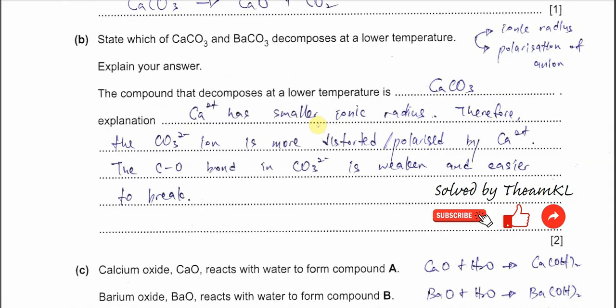Part B: State which of calcium carbonate and barium carbonate decomposes at a lower temperature. For this one you need to relate to the ionic radius and eventually the polarization of the cations on the anion.